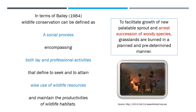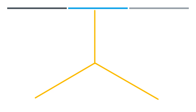Now let us look at what we mean when we say wildlife conservation is a social process. This concept has been given by Billy. In trying to explain wildlife conservation as a social process, he found it appropriate to divide society into three sectors: the scientific sector, the social sector (the general public at large), and the management sector (the forest department).